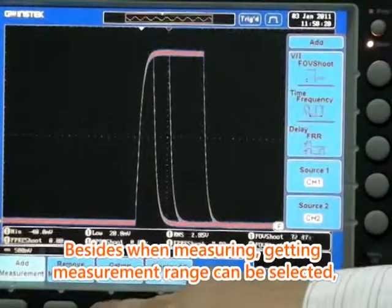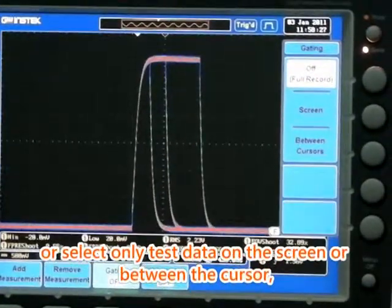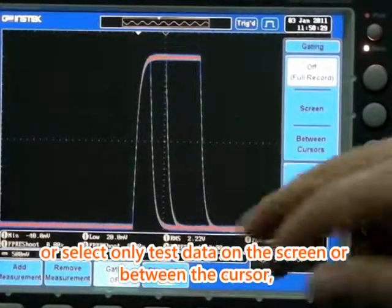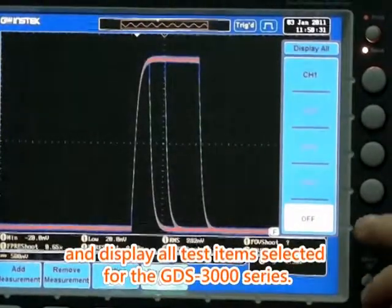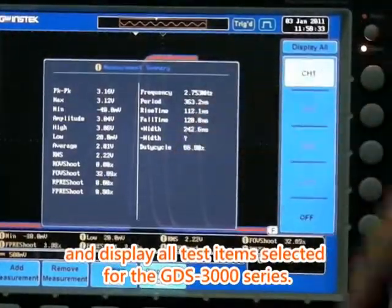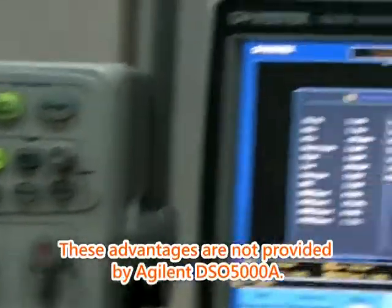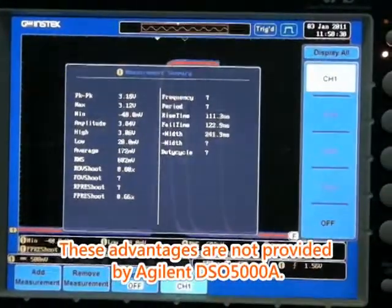Besides when measuring, the measurement range can be selected or select only test data on the screen or between the cursor and display all test items selected for the GDS-3000 series. These advantages are not provided by DS-05000A.